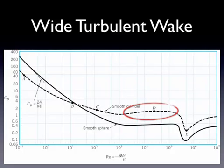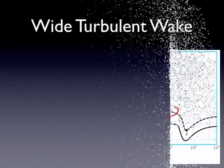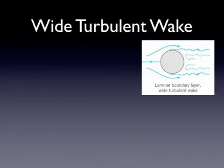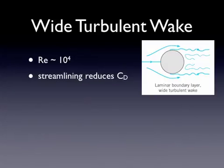At higher velocities around a Reynolds number of 10 to the 4th, we get into turbulence and begin to form a turbulent boundary layer. A wide turbulent wake forms behind the object with a pretty high drag component. There are back eddies and low-pressure regions. Streamlining would greatly reduce the coefficient of drag here — the turbulent region would be off just the tip of the object rather than the big back end, greatly reducing the size of the turbulent wake.